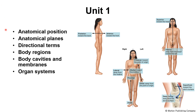Today we're going to go over unit one in your lab manual. We're going to go over anatomical position, the anatomical planes, directional terms, body regions, body cavities and membranes, and also the organ systems.